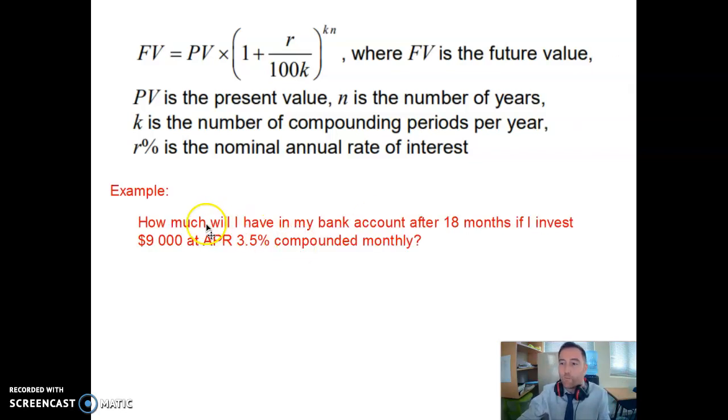So here's an example. How much will I have in my bank account after 18 months if I invest $9,000, annual percentage rate 3.5% compounded monthly? Well, let's just substitute all those values in. All we have to know is that this K is going to be the number of compounding periods per year. It sounds a bit confusing. All it means is if it's monthly, K equals 12 because there's 12 months in a year.